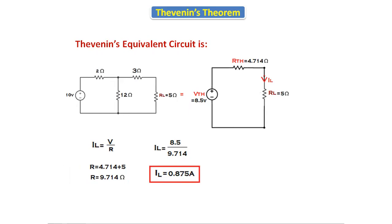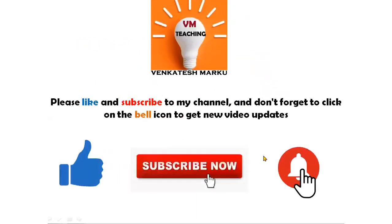This is the total procedure to find the Thevenin's equivalent circuit. We first calculated VTH, then found RTH, substituted both values into the equivalent circuit, and finally found the load current using simple Ohm's law. In the next class we are going to discuss about Norton's theorem. Thank you everyone.